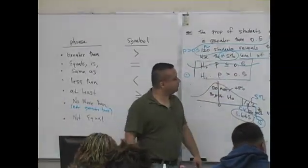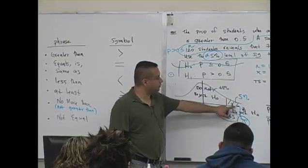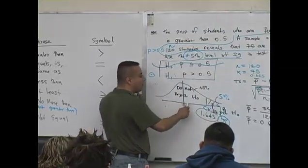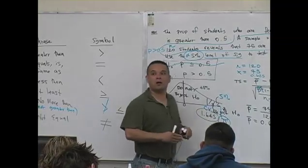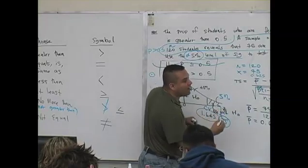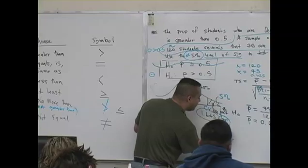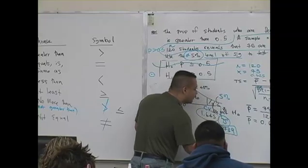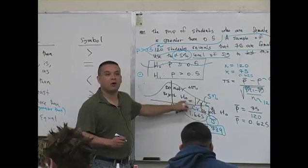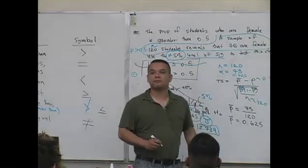Say that again? No, no, no. This is zero. And as you walk this way, the values get larger. So if this is 1.645, we have a value of 2.739. That's your test statistic value. That value is to the right of the 1.645. Larger values live to the right. Smaller are to the left.